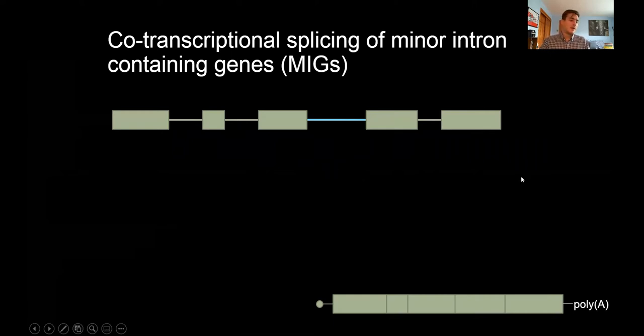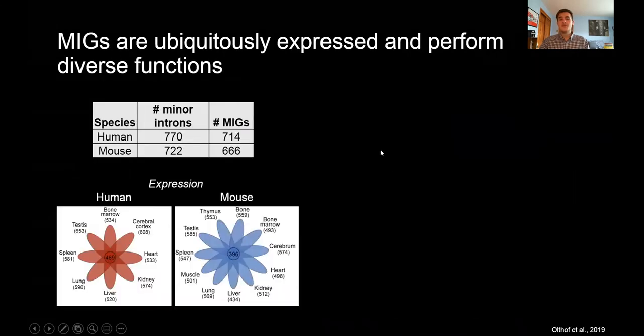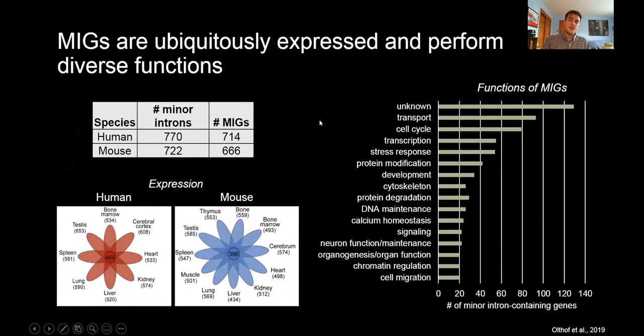What's curious is that this type of complexity is required for few genes. In human, there exist 770 minor introns found in 714 MIGs, whereas in mouse, there are 722 minor introns found in 666 MIGs. When we looked at the expression of these MIGs throughout many different tissues, we found that they are rather ubiquitously expressed for both mouse and human. This ubiquitous expression is reinforced by the idea that the functions of these MIGs are rather diverse but essential cellular processes, such as transport, cell cycle, transcription, stress response, protein modification, etc. Therefore, minor intron splicing is required in all these different tissue types and is a ubiquitous process.